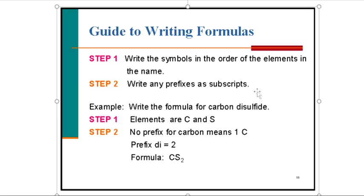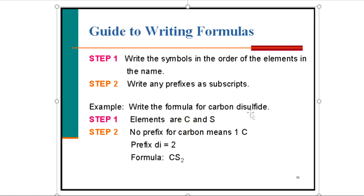Now let's write the formula from a name. For carbon disulfide: write the chemical symbols and apply the numbers. Carbon is C — no number mentioned, so we leave it as one. Disulfide means two sulfur atoms. So we write CS2. That is how you convert a name back into a chemical formula.